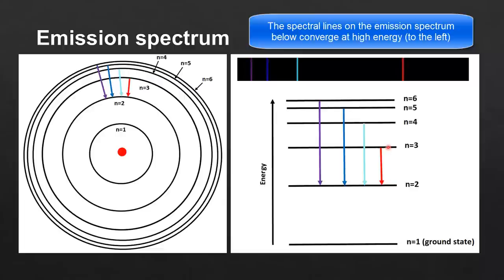Starting with the red arrow, it represents an electron transition from n equals 3 to n equals 2. When an electron transitions from a higher to a lower energy level, it emits a discrete amount of energy, and the energy emitted corresponds to the wavelength of red light. The blue arrow represents an electron transition from n equals 5 to n equals 2, and when the electron transitions to a lower energy level, the energy emitted corresponds to the wavelength of blue light.